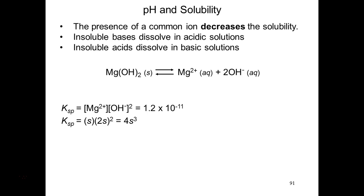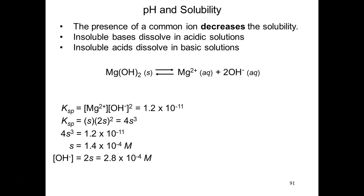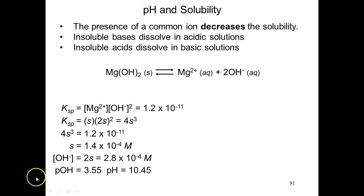With that said, we can use an ICE table to figure out that value of S — that concentration we get from that value of S. Therefore, we can use that to figure out the concentration of hydroxide in a saturated solution. We then turn that concentration into a pOH and then a pH. The pH of a saturated solution of this, according to its solubility product, is going to be 10.45.